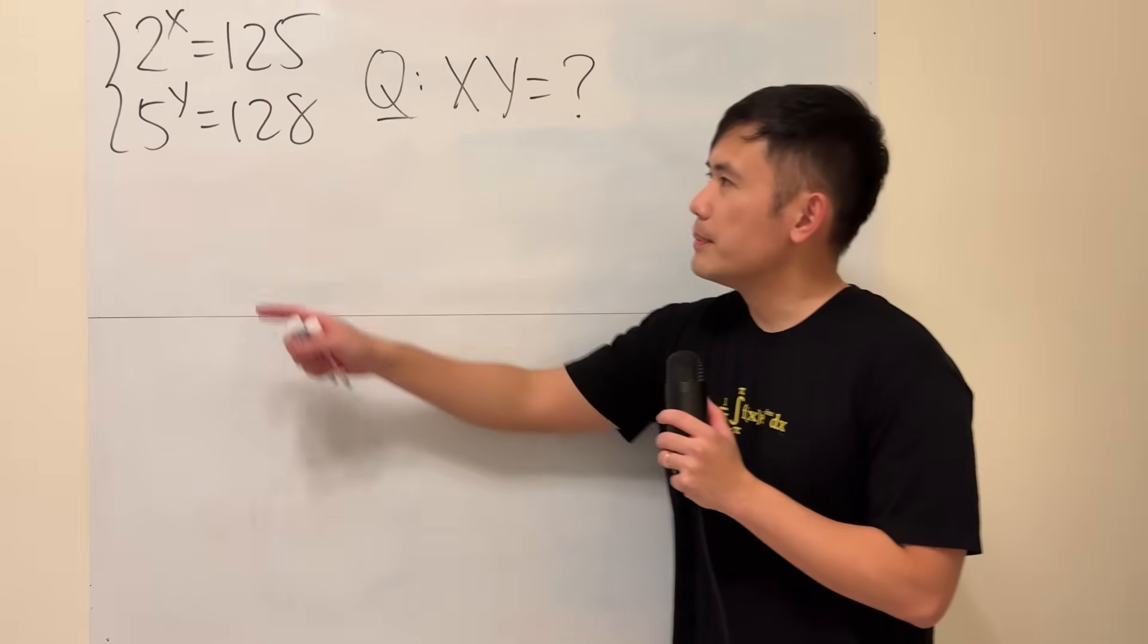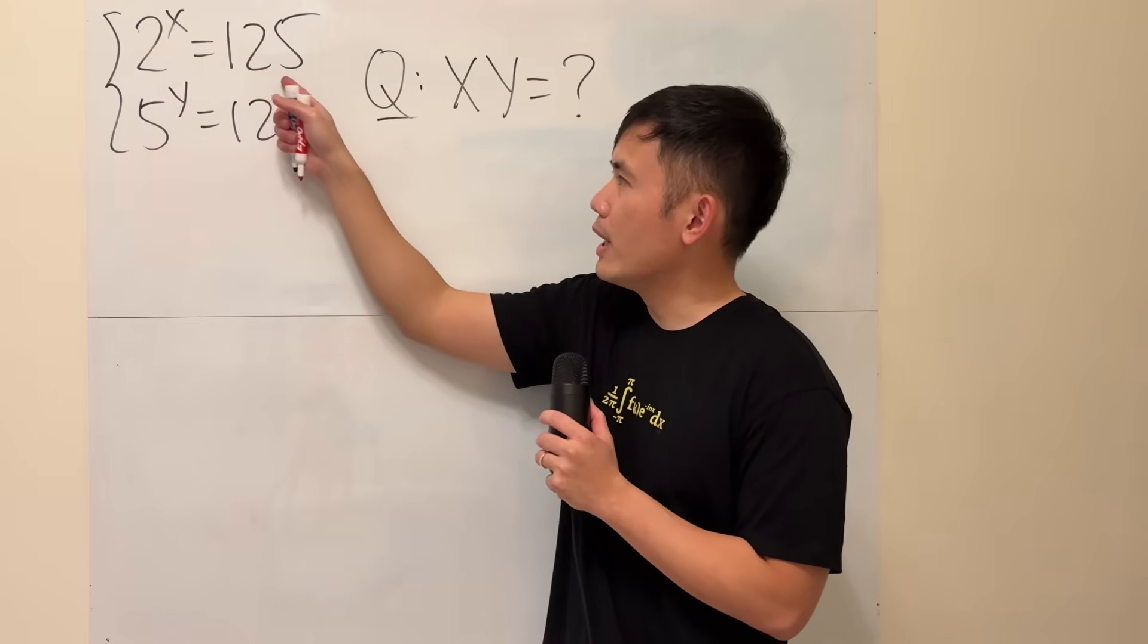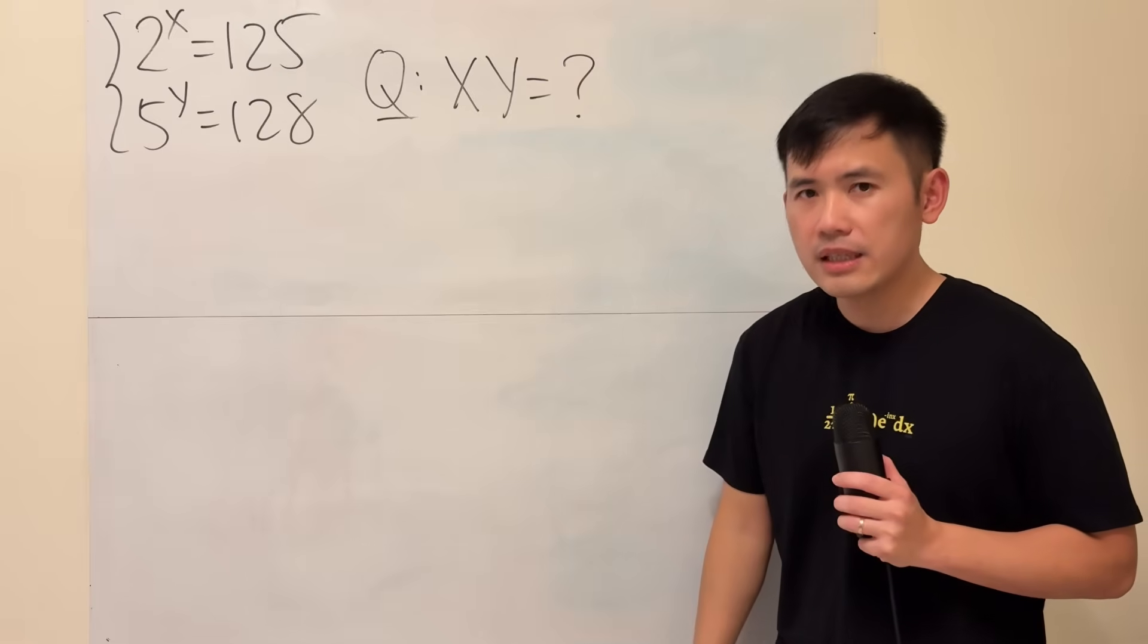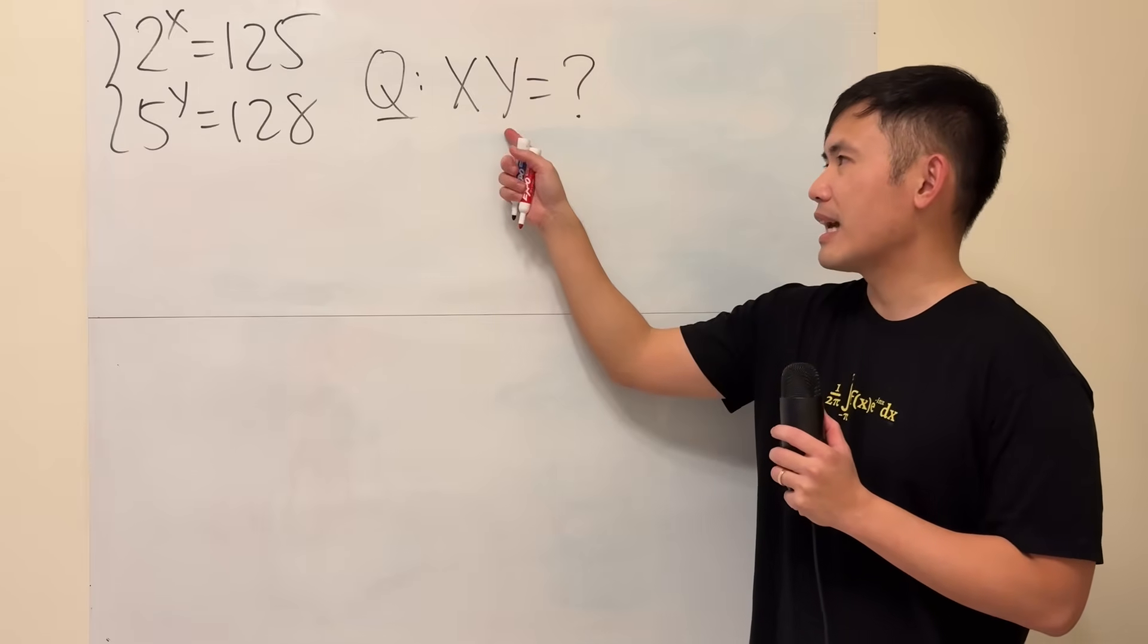Here's a fun question for you guys. Suppose we have 2 to the x is equal to 125, and 5 to the y is equal to 128, and the question is asking us to find the value for x times y.